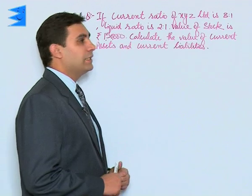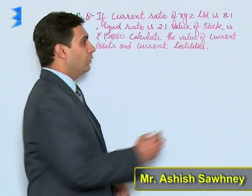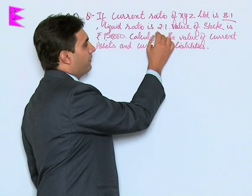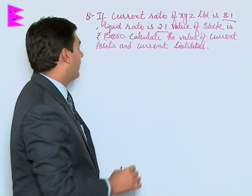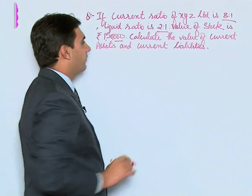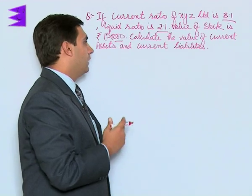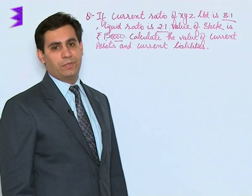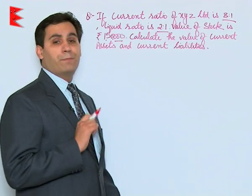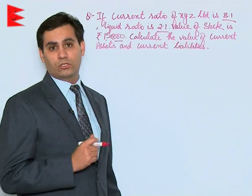The current ratio of XYZ Limited is given to be 3:1. The liquid ratio of the same company is 2:1. If the value of stock is ₹1,50,000, we are required to calculate the value of current assets and current liabilities. This question involves application of both current ratio and liquid ratio.